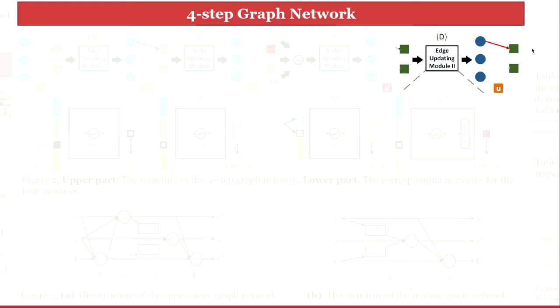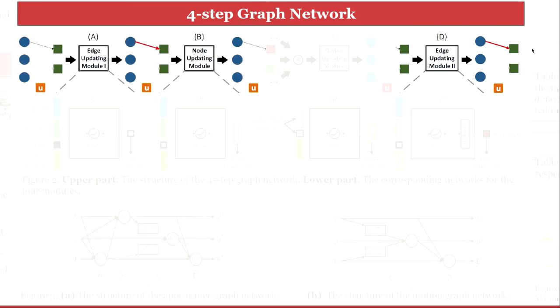Meanwhile, one more edge updating module should be added to update edges at first, because the node updating module depends on updated edges rather than initialized edges. Moreover, the global variable is expected to capture the global relationship among objects.